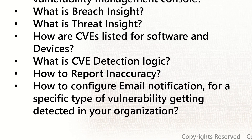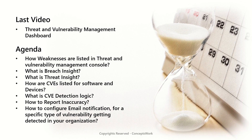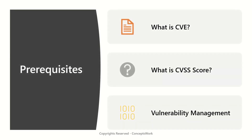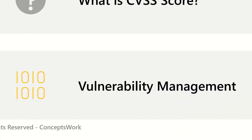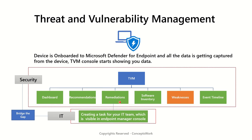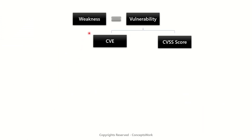Lastly, we'll check how to configure email notifications for a specific type of vulnerability detected in your organization. To understand the content covered in this video, you must have a basic understanding of what a CVE is, what a CVSS score is, and how the vulnerability management process works. Weaknesses, as we know, are vulnerabilities, and there is a standard to define vulnerabilities termed as CVE. Based on the impact, a CVSS score is also defined for each vulnerability.